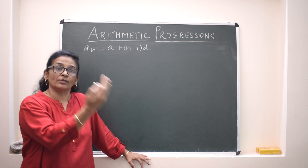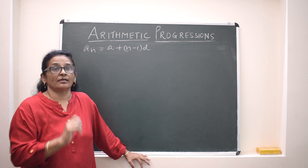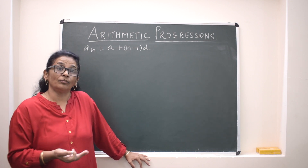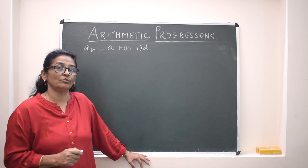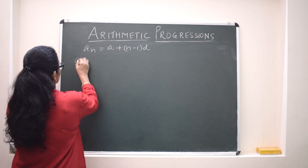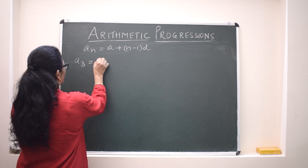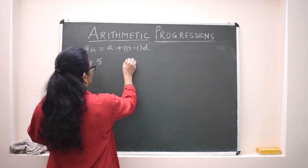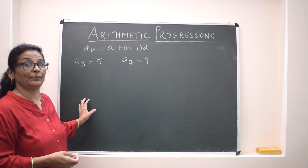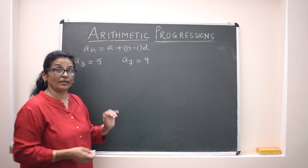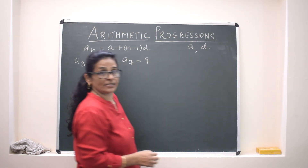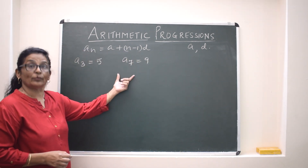Sometimes a particular term or two terms will be given and they ask you to find the AP. When two terms are given, they form two equations in two variables — those variables being A and D.